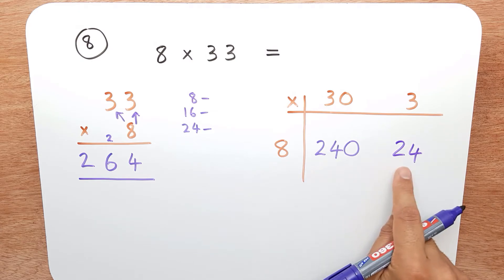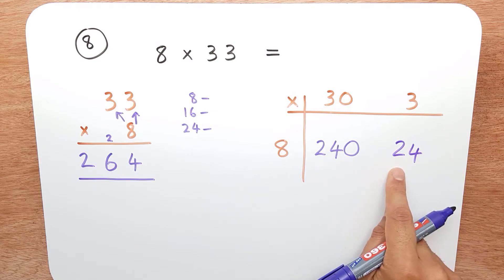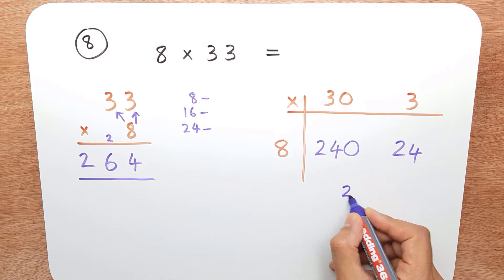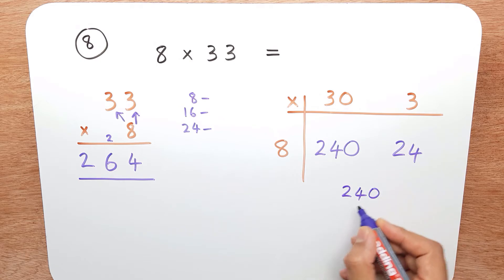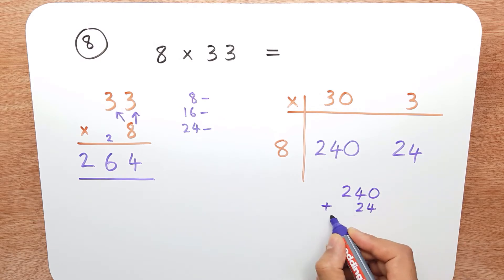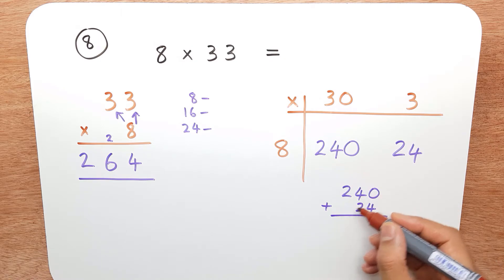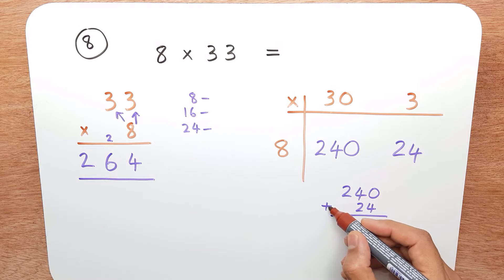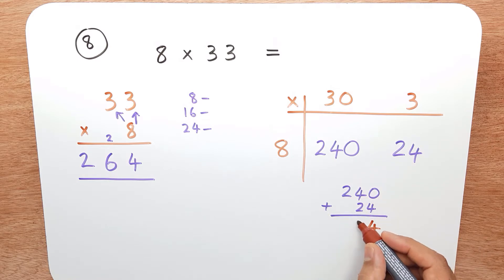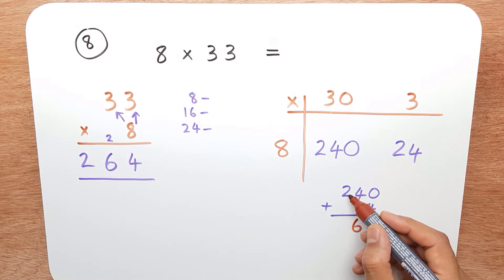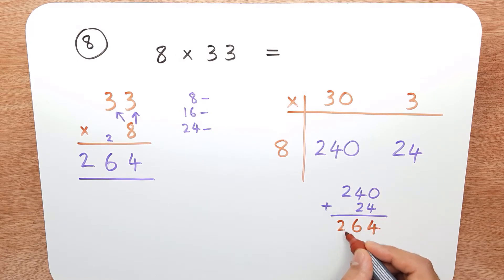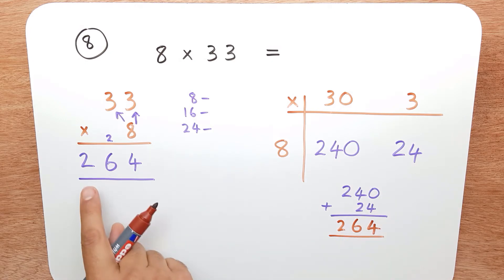Now I simply add these two numbers in column addition: two hundred and forty add twenty-four. Zero add four is four. Four add two is six. And then I have two add nothing, which is simply two. And our answer is two hundred and sixty-four — the same as before.